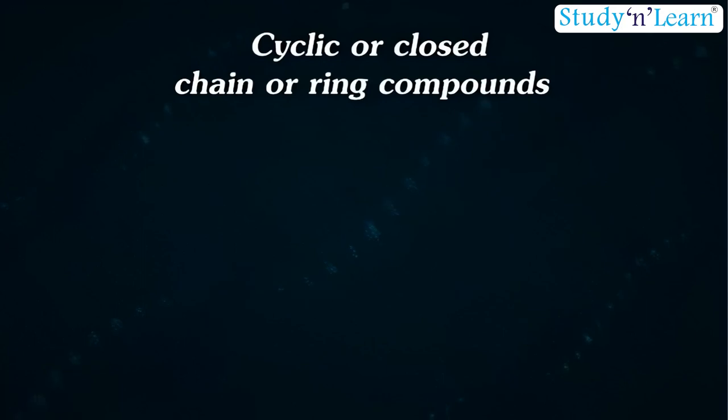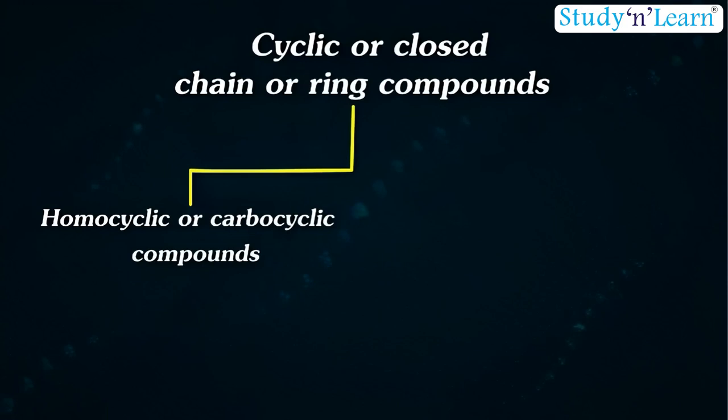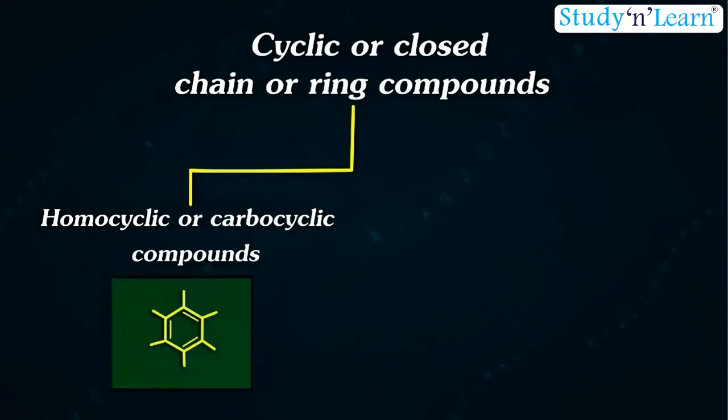Further, cyclic or closed-chain or ring compounds are divided into two parts as shown: 1. Homocyclic or carbocyclic compounds and 2. Heterocyclic compounds.